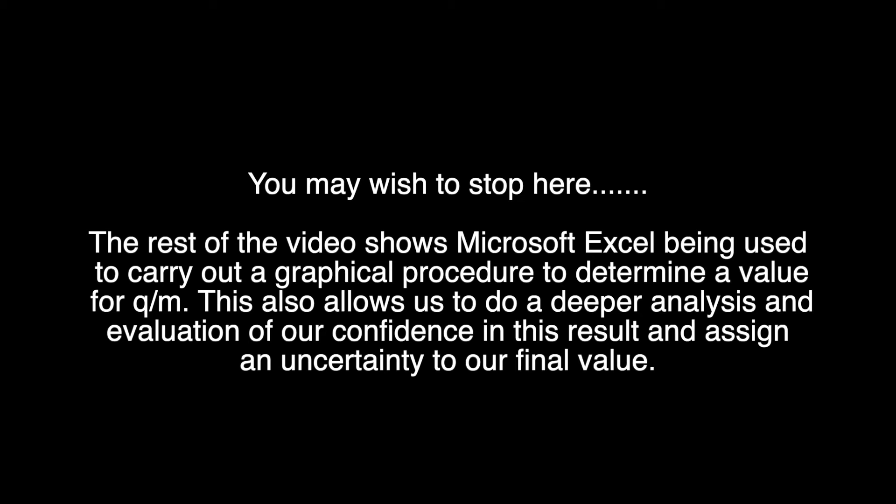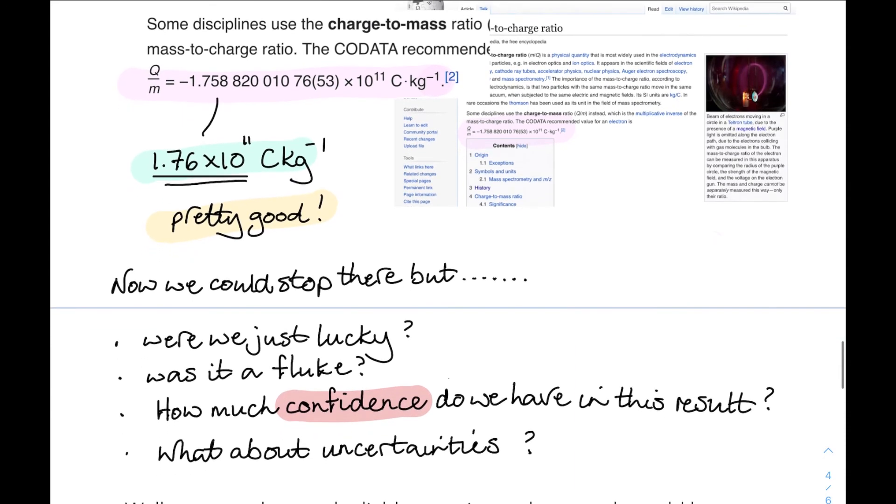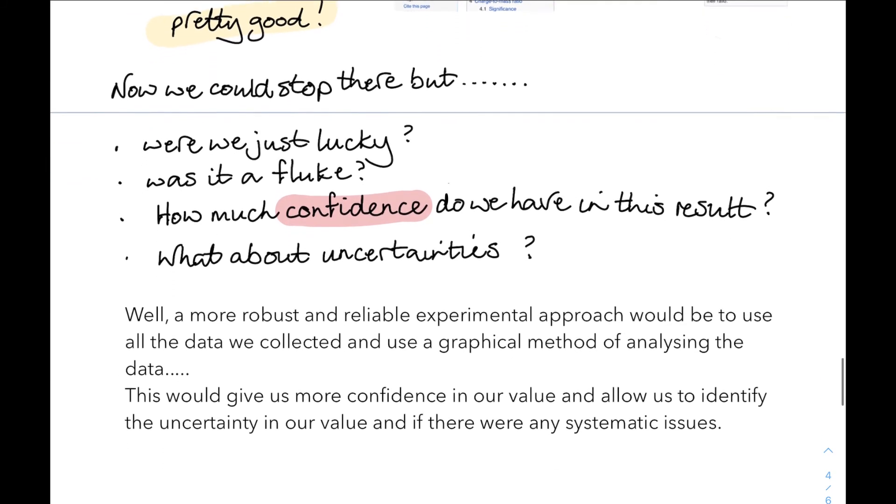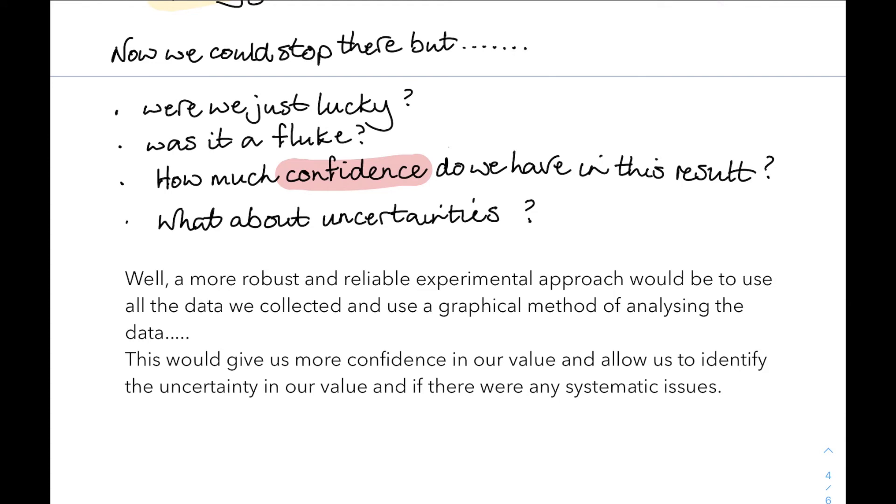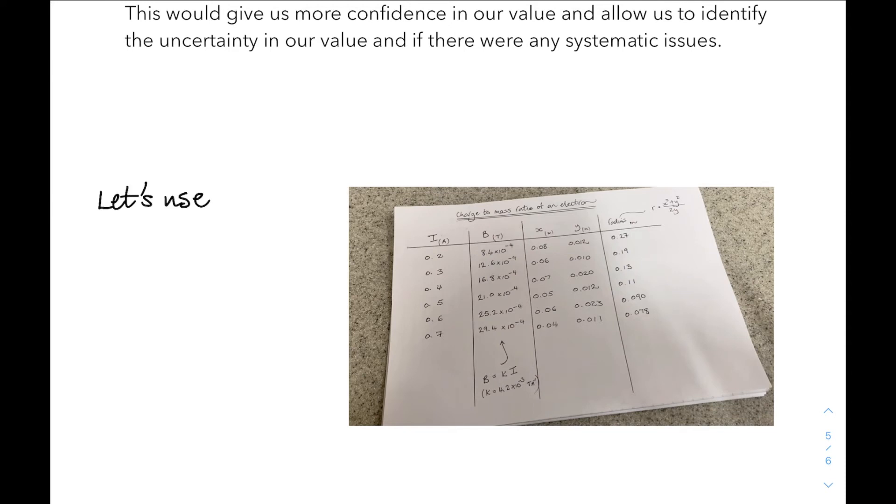But the rest of the video is where we use Microsoft Excel to do a graphical procedure to determine a value for q over m. This will also indicate the uncertainty in our final value. So with our initial calculation, were we just lucky? Was it a fluke? Can we be confident in this result? What about our uncertainties? Well, a more robust and reliable experimental approach would be to use all the data we collected and draw a graph of that data and use the gradient to work out a value for q over m. We can be more confident in this value and identify any systematic issues. So let's take all of that data that we collected and draw a graph.